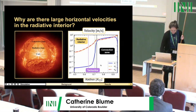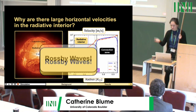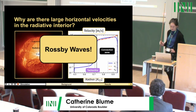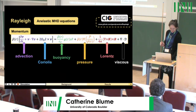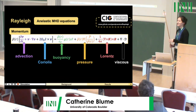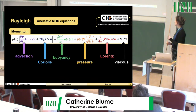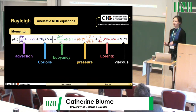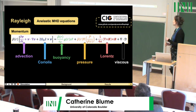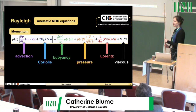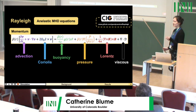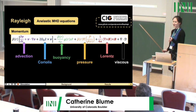I'm here today to tell you that it's because of Rossby waves, which is what this talk is about. The code we're using is the Rayleigh code, developed by Nick Featherstone. It's a global 3D convective code in spherical coordinates, and I'm running it using the anelastic MHD equations. We know we've talked a lot about acoustic waves this week — we're completely ignoring all of those.